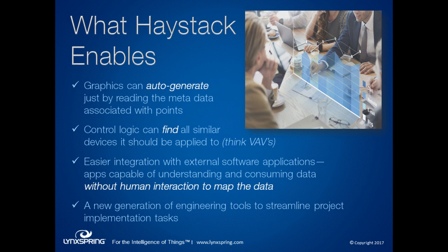But it goes beyond graphics. Even control logic can automatically find all its targets or devices. You could have a VAV control sequence that goes out and finds all things tagged as VAV boxes and applies the control logic to them — dramatically reducing the engineering effort to implement automation and control systems. When you want to integrate with other third-party applications, the fact that they can quickly understand the meaning of the data means you can implement software applications — from maintenance management, CMS, and visualization reporting — much more quickly with less effort and lower cost.